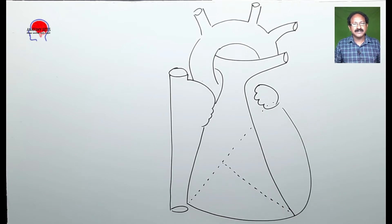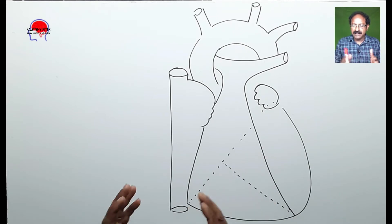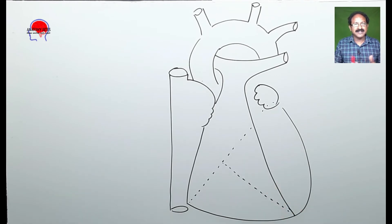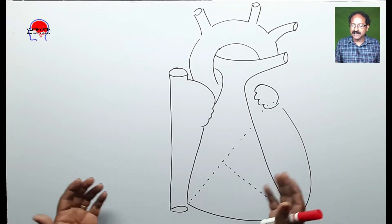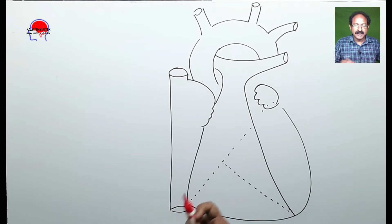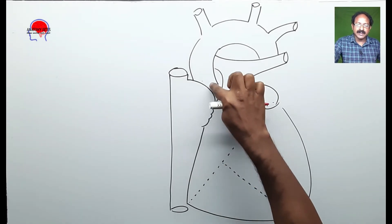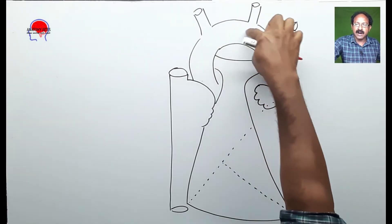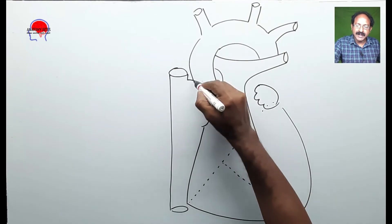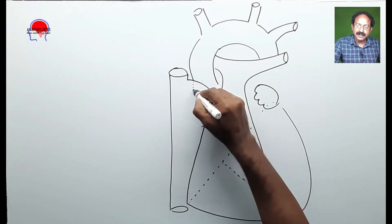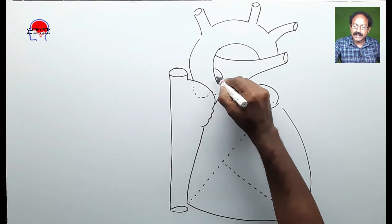Now we have learned to draw the outline of the heart. We will see how we can superimpose the coronary arteries on this basic outline of the heart. Remember that the coronary arteries arise from the aortic sinuses. Here is the ascending aorta, arch and descending aorta. Somewhere here is the aortic sinus.